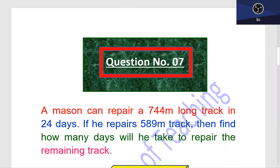A mason can repair a 744 meter long track in 24 days. If he repairs 589 meter track, then find how many days will he take to repair the remaining track.